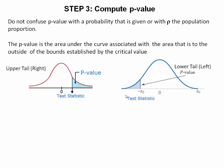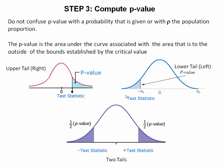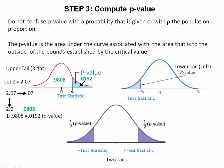What happens if we have a two-tail test? With a two-tail test, our p-value is on both sides. For example, when I compute the test statistic and find that it is 2.07, I'm going to plot 2.07 on my graph, then look up 2.07 on my table — reading down the 2.0 and across the 0.07 — and I get 0.9808. That gives me the unshaded area. If I subtract from 1, I get 0.0192, which represents my p-value.